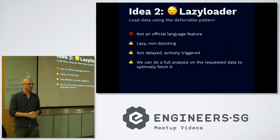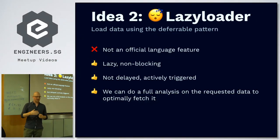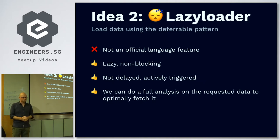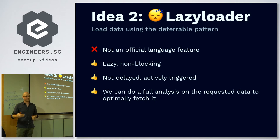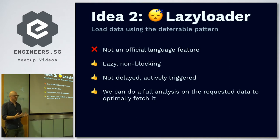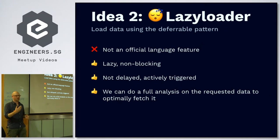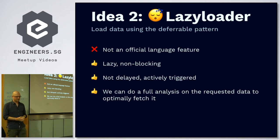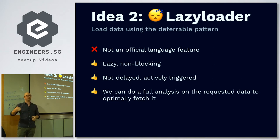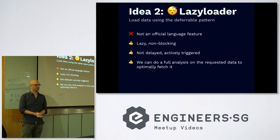Another way to do this is using the deferral pattern. It's kind of like a promise — a deferral and a promise are quite similar. But with a deferral, you have to actively run or trigger it. The upside is that it's lazy — a lazy data structure, non-blocking. You can call it multiple times with no delay. The good side is that you can, at the very end — and this is really good for GraphQL — know exactly what's being requested, and only then resolve it and load all the data as efficiently as possible.